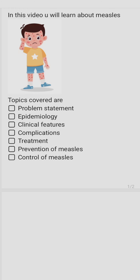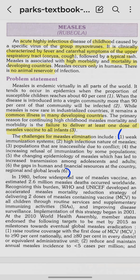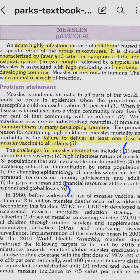Measles is a highly acute infectious disease of childhood. It is caused by the measles virus, which belongs to the group of myxovirus. The family is paramyxovirus and it belongs to the genus morbillivirus. It is a common illness in many developing countries, though it also exists in developed countries.